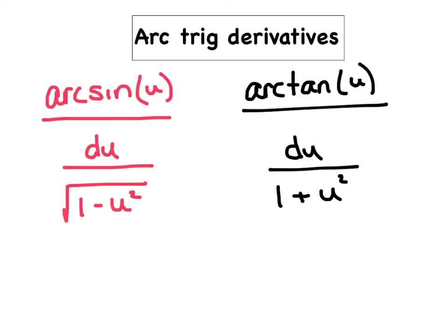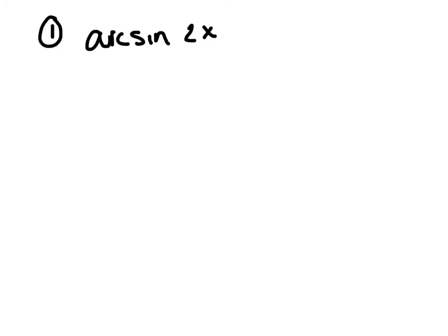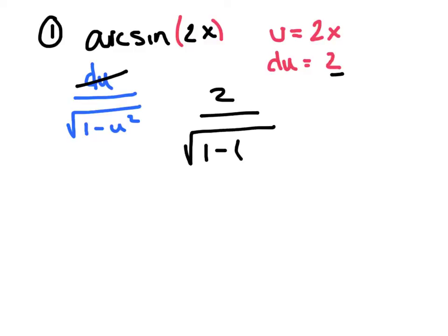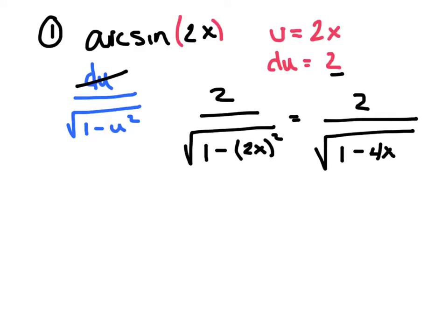Once you have the two rules down, it's pretty simple after that. Let's practice. We'll start with a simple one: the derivative of arcsin(2x). I immediately write the rule: du over the square root of 1 minus u squared. My u is 2x, so du is 2. I replace du with 2 and substitute u: 2 over the square root of 1 minus (2x)², which cleans up to 2 over the square root of 1 minus 4x². That simple.